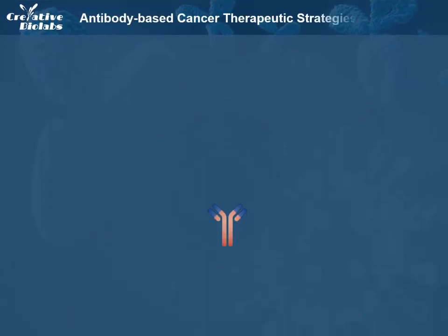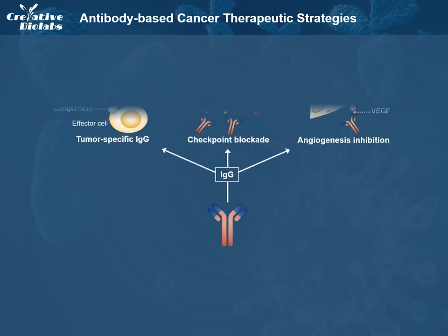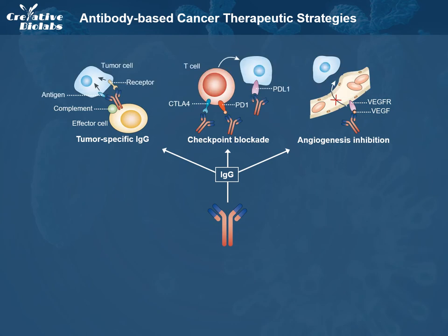Successful monoclonal antibody therapeutics have been based on a number of strategies. IgG molecules that bind to target cancer cells can mediate antibody-dependent cellular cytotoxicity by immune effector cells, induce complement-dependent cytotoxicity, or result in direct signaling-induced death of cancer cells. IgG monoclonal antibodies can also be used to inhibit angiogenesis or to block inhibitory signals, thereby resulting in a stronger anti-tumor T cell response.